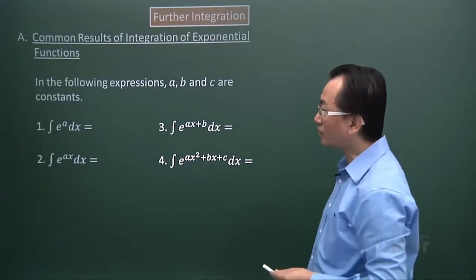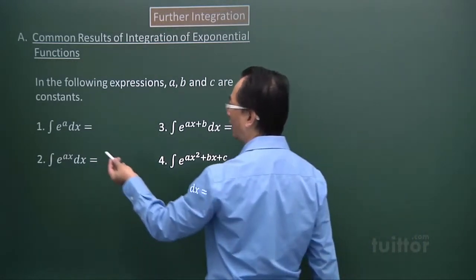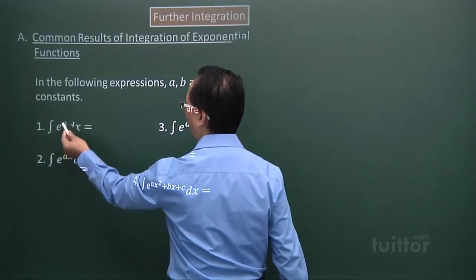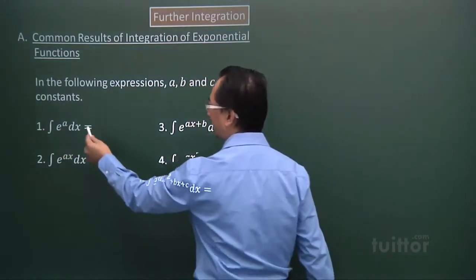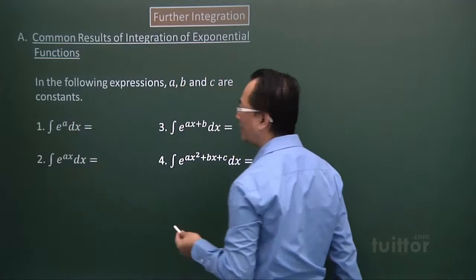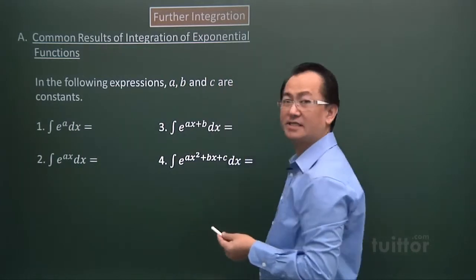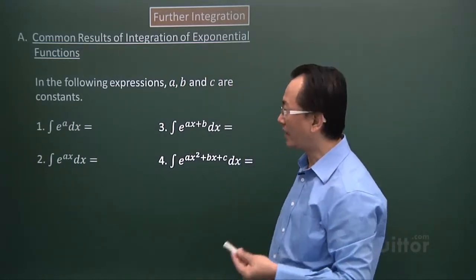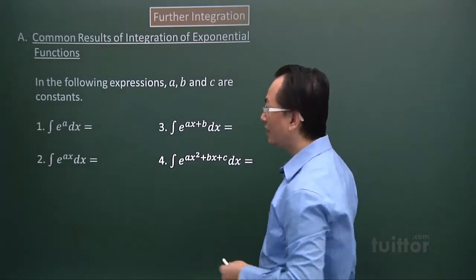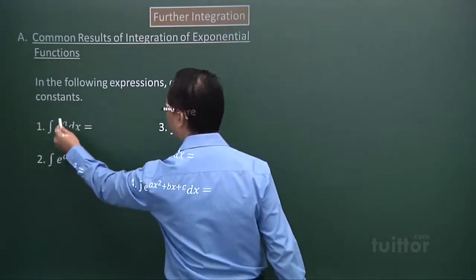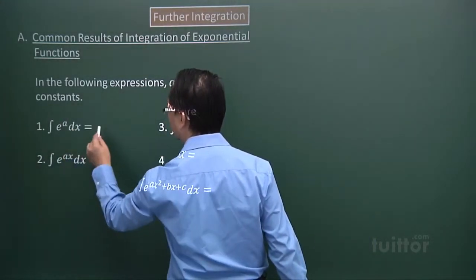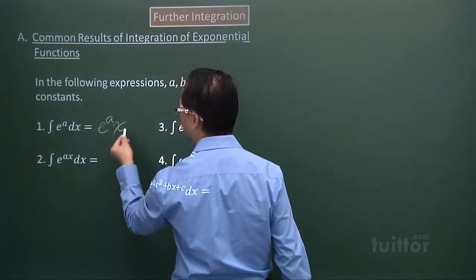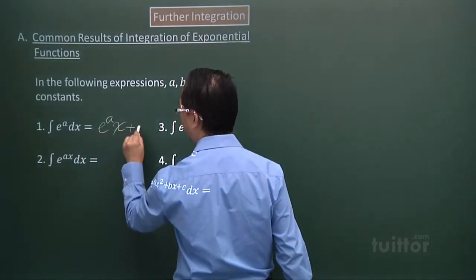Let's look at the integration of e to the power of A. First we must see that e to the power of A is just a constant. So when I integrate that, treating it as a constant, I'll get e to the power of A times x, plus C.